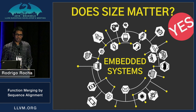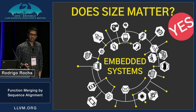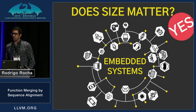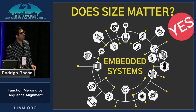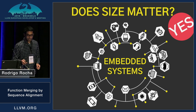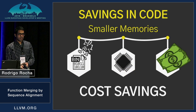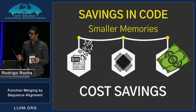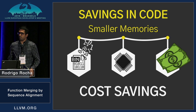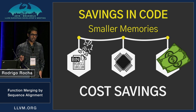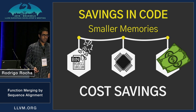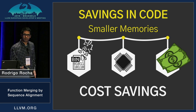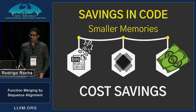Another upside of reducing code size is that we free extra space for new features and more user data. So if we can have smaller programs it means that we can have smaller memories, reducing costs, and many companies are looking for this.